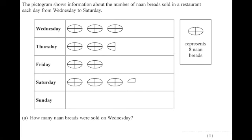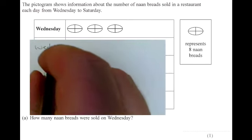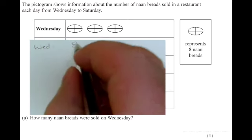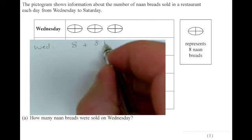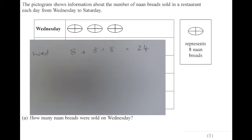We've got a pictogram question here. They've told us that one naan bread, which has got four segments or four quarters, equals eight loaves. So let's have a look at that first question. We've got to work out how many breads there are on Wednesday. We've got three eights, and 8 times 3 is 24, so that must be 24 loaves.